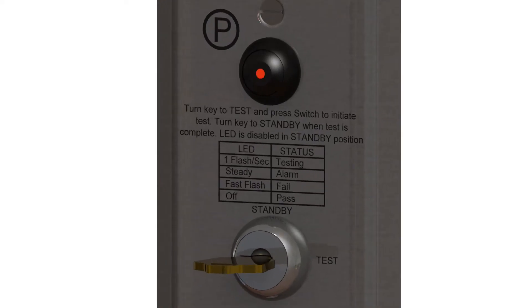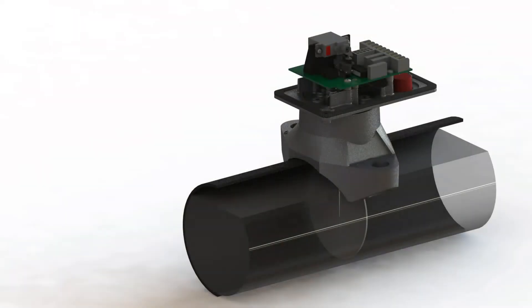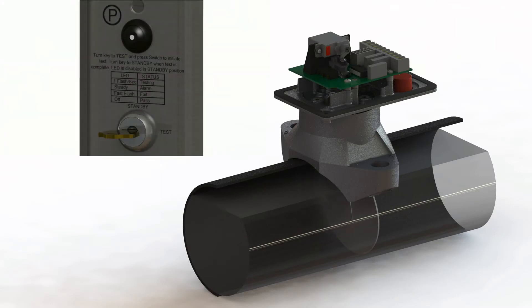This will activate the servo motor which simulates water flow by moving the trip stem on the VSR-AT. The LED on the ATC push button switch will flash once per second as the retard is being timed.